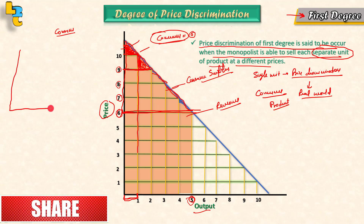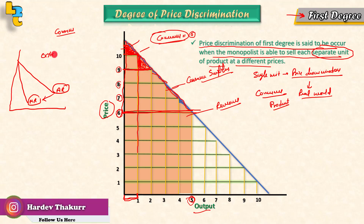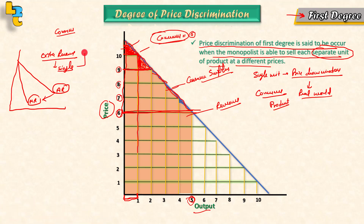In the monopoly case, we found that the average revenue curve is the demand curve and the marginal revenue curve is below it. However, in the first degree price discrimination case, the marginal revenue curve is the same as the demand curve, because each unit is sold at a different price. So the marginal revenue equals the average revenue in first degree price discrimination.